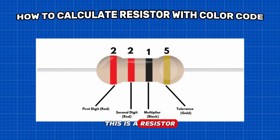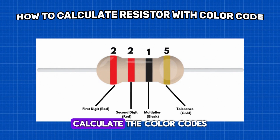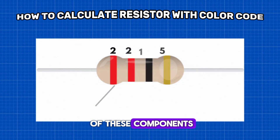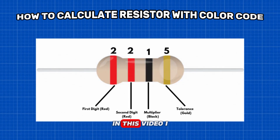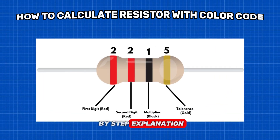This is a resistor, but how can you calculate the color codes of these components? In this video, I will provide a step-by-step explanation.